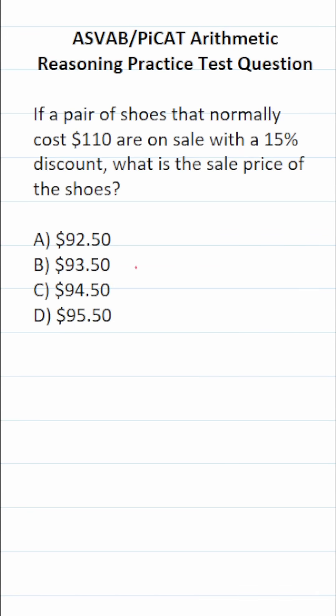This arithmetic reasoning practice test question for the ASVAB and PiCAT says, if a pair of shoes that normally cost $110 are on sale with a 15% discount, what is the sale price of the shoes?